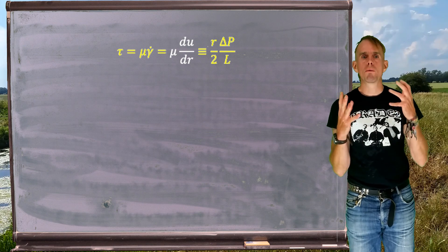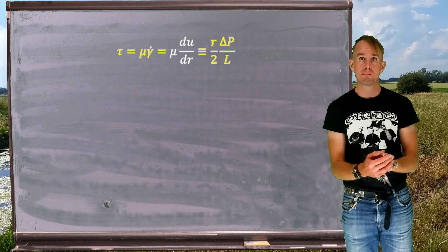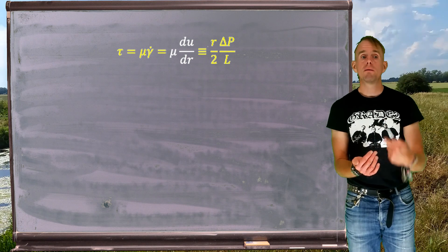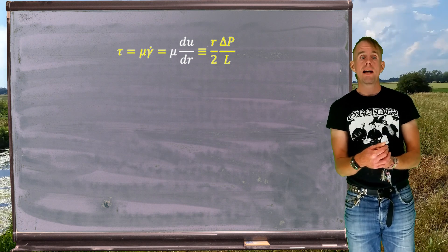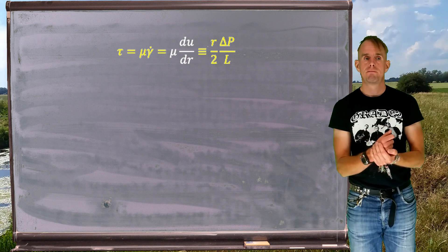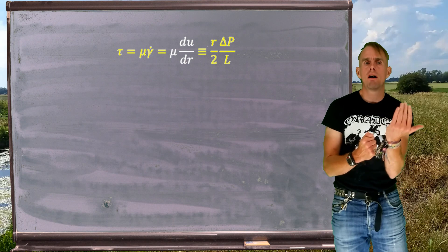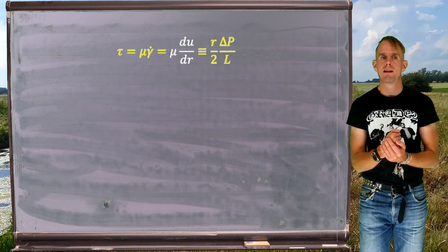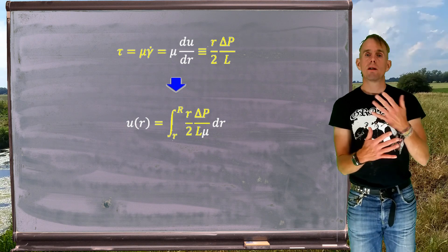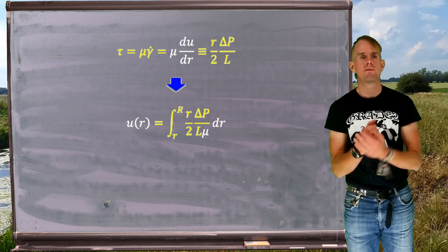Now let's tie this in to the Newtonian constitutive equation. Back in 1D, τ = μ · γ̇, where γ̇ is du/dr in this case. We know we can write that as r/2 · Δp/L from what we've just derived for τ. So we now have μ · du/dr = r/2 · Δp/L. What we want to do first is derive a velocity field — how does velocity u vary with radius r?